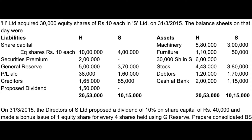Now, we are going to prepare the consolidated balance sheet. In the previous video, we have explained the concepts. H Limited acquired 30,000 shares of Rs. 10 each in S Limited. H is a holding company, S is a subsidiary company. On 31st March 2015, the balance sheet is given.